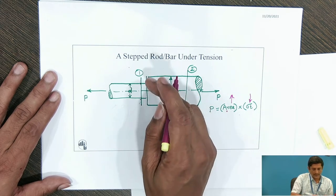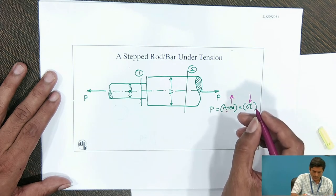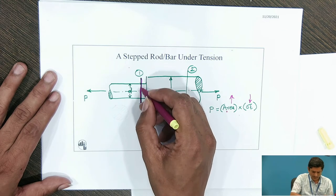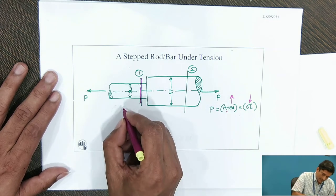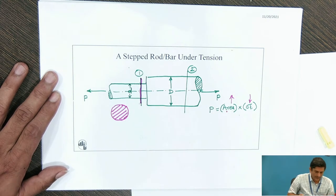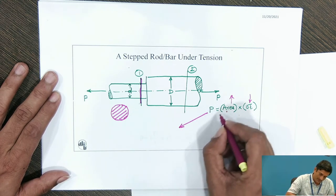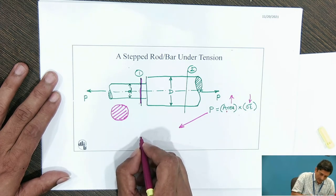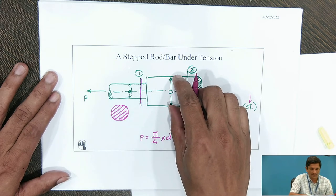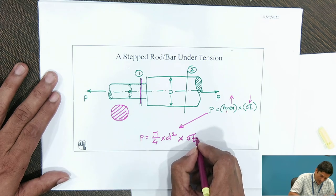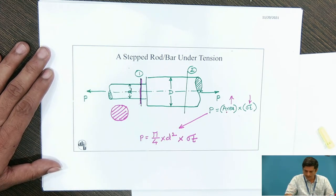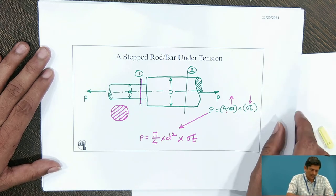Therefore, the failure is going to happen at the weakest cross section. When there is a variation in cross section, one needs to identify where the weak section is. This is the weakest section — at the junction — but we will take that the failure is going to happen at diameter small d. The section is a circular cross section which is going to resist the failure. So: P equals pi/4 times d squared, taking small d because at the larger diameter capital D failure is not going to happen, multiplied by sigma t. This is the design equation for the stepped rod loaded under tension.